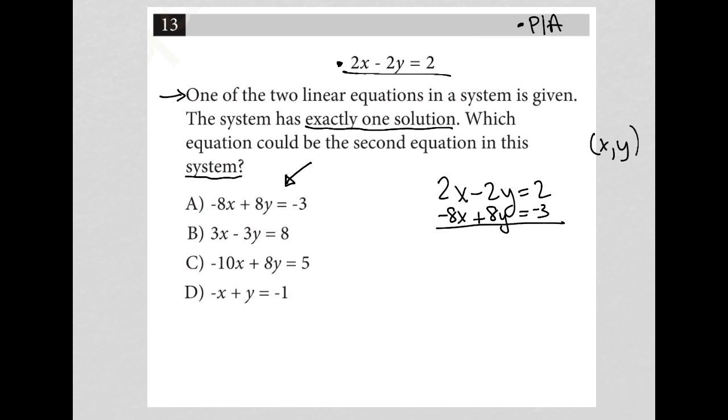To solve by elimination, I would multiply my top equation by 4. Therefore it would turn into positive 8x minus 8y equals 8. My second equation would remain negative 8x plus 8y equals negative 3.